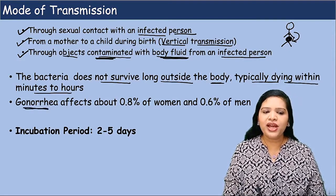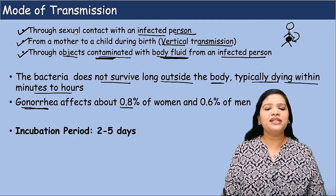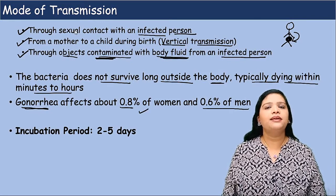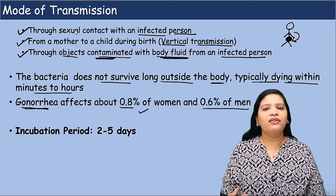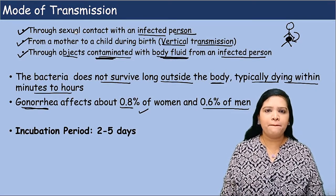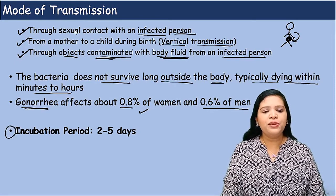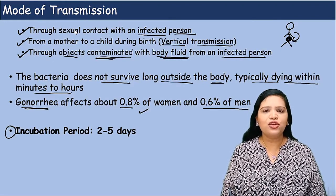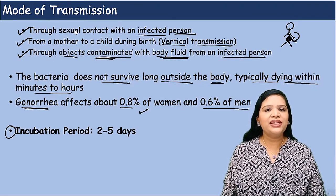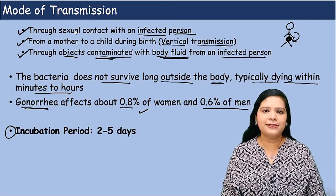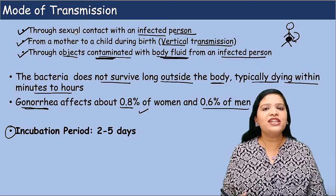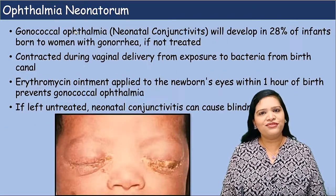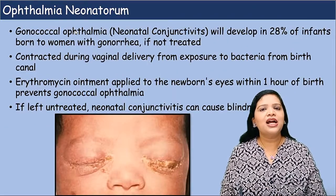This gonorrhea infection affects 0.8% of women and 0.6% of men. According to these statistics, women are at higher risk compared to males. The incubation period for this disease is two to five days. The incubation period is the time taken between entry of the bacteria and appearance of the first symptom. So for gonorrhea, symptoms start showing within two to five days.